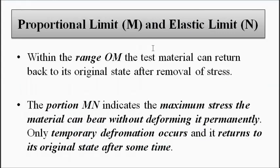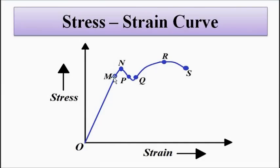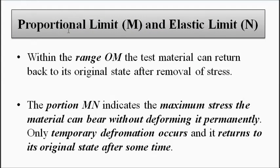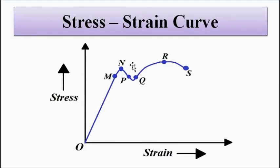The proportionality limit M indicates the maximum stress after the removal of which the material can return back to its initial state almost immediately. N, the elastic limit, is the maximum stress after the removal of which the material will return back to its original state, but after a certain period of time. Point N is the maximum point of elasticity — beyond this the elastic property of the material goes away. Within the range O to N, the material has the possibility of returning back to its original state; beyond this, elastic behavior disappears.